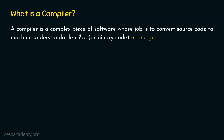A compiler is a complex piece of software whose job is to convert source code to machine-understandable code, or binary code, in one go. Many people have the confusion that a compiler is hardware — no, a compiler is software, and a complex piece of software at that. It has a lot of functionality, but we don't have to understand each and every detail about a compiler, as those details are out of the scope of this course.